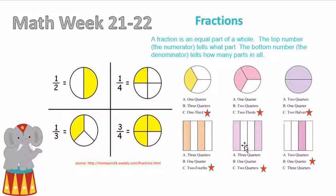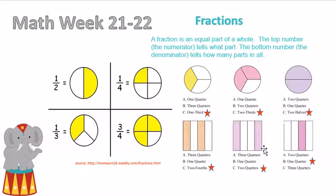Here we have one, two, three, four, so we know the second part of the name will either be fourths or quarters. Because if you had a dollar, a dollar would be the same as having four quarters. So we're going to name this fraction two quarters, because two of the quarters are shaded in.